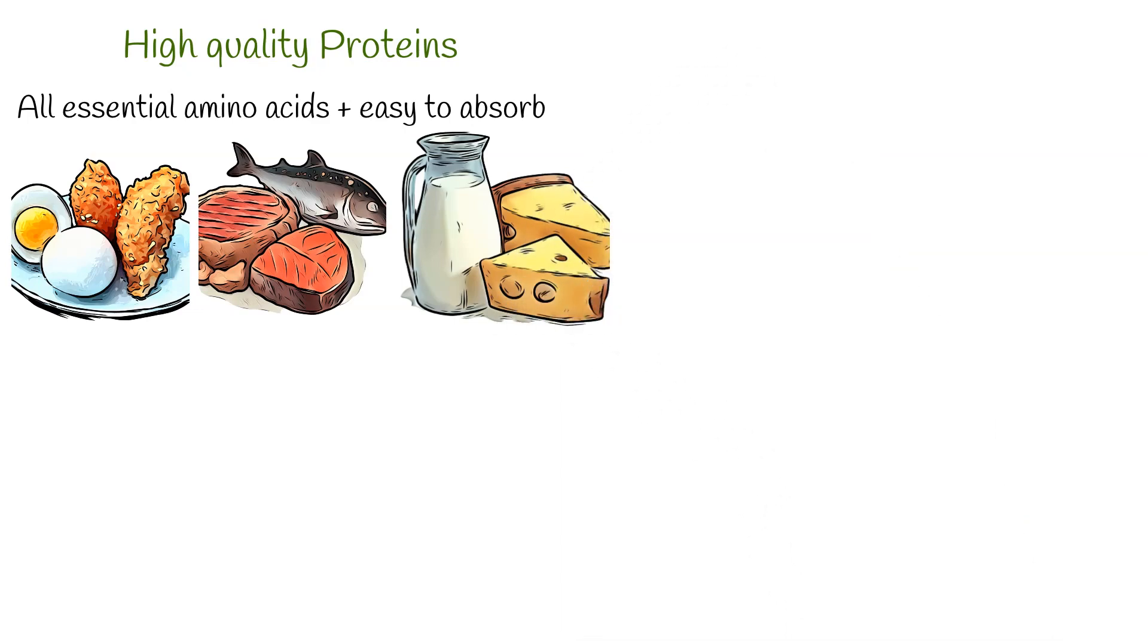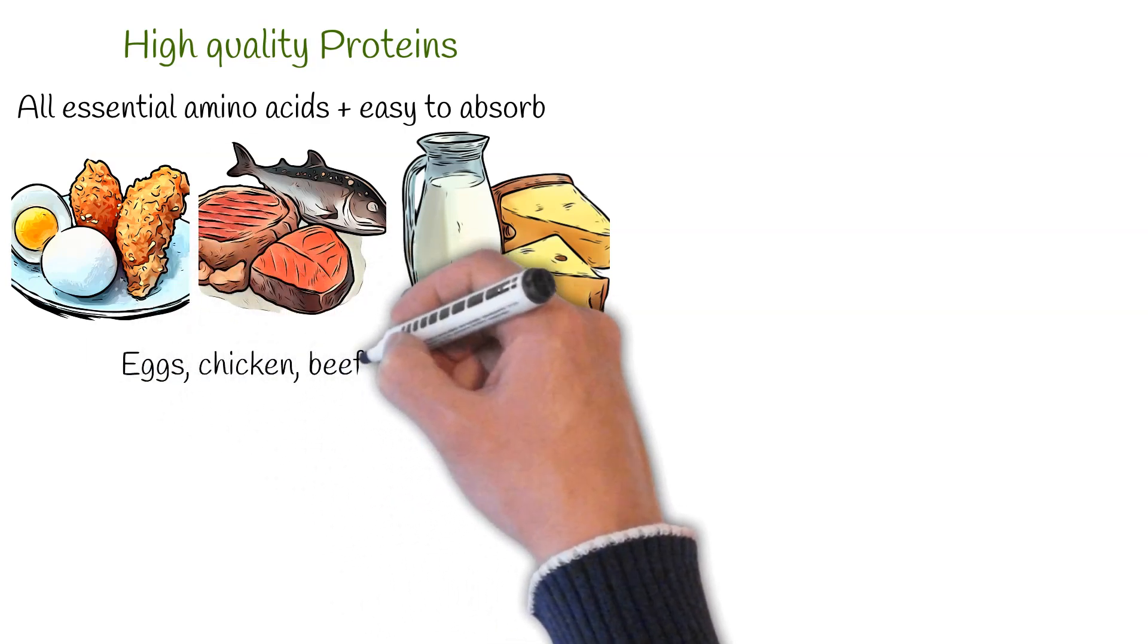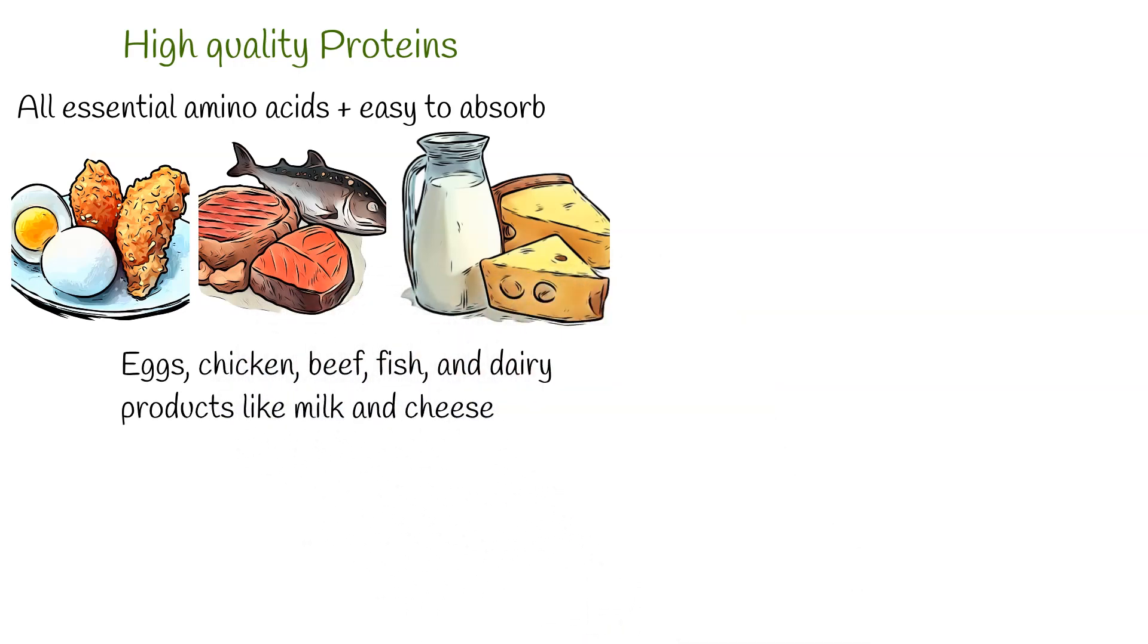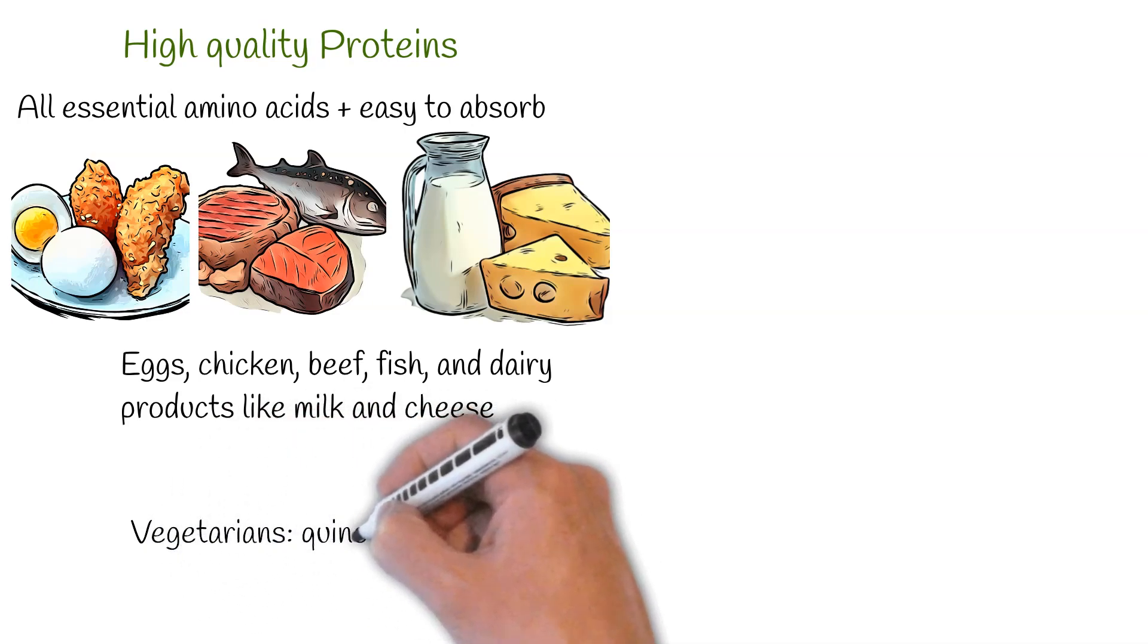Eggs are often hailed as the quintessential protein source because they provide a complete amino acid profile. Other comprehensive protein sources encompass chicken, beef, fish, and dairy products like milk and cheese. Vegetarians can find complete proteins in quinoa and tofu.